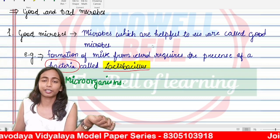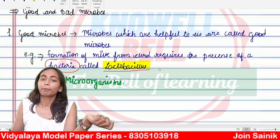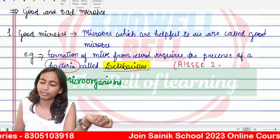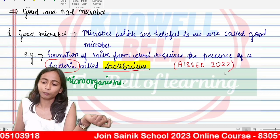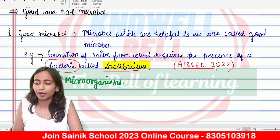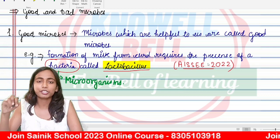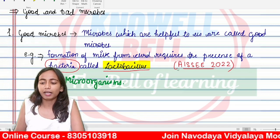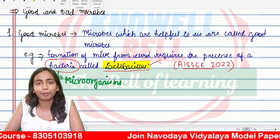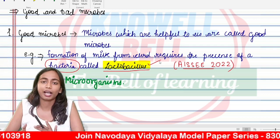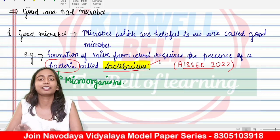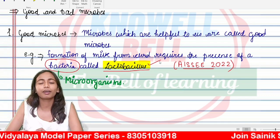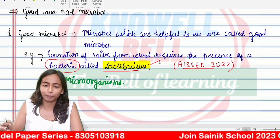This is a very important statement. Why is it important? Because this statement, as it is, was asked in the CENIC school entrance exam, AISSEE 2022. On that exam, the GK question was: 'Formation of curd from milk requires the presence of which microorganism?' The answer was the bacteria Lactobacillus. So, one question has been asked from here already, and it can be asked in the next year also. Let's get prepared — formation of curd from milk requires the presence of bacteria Lactobacillus.